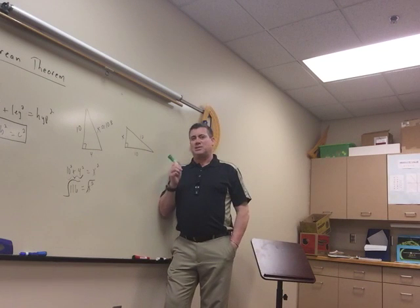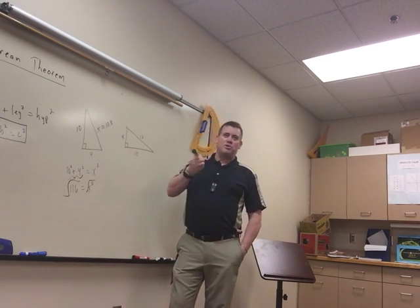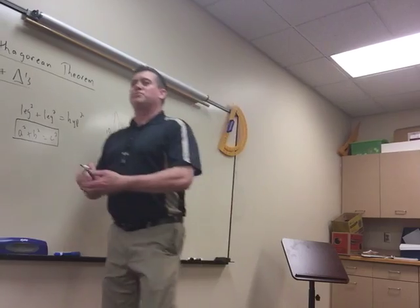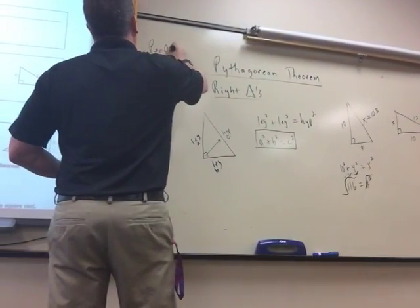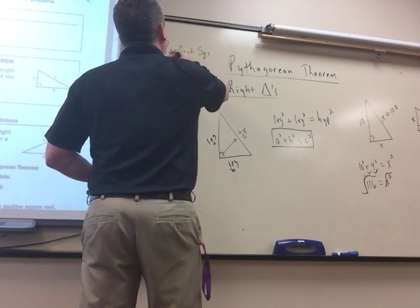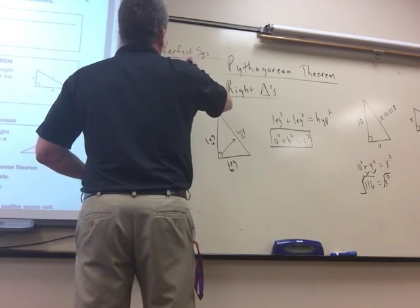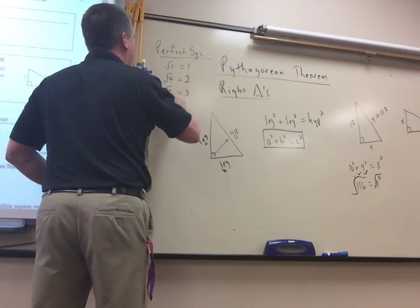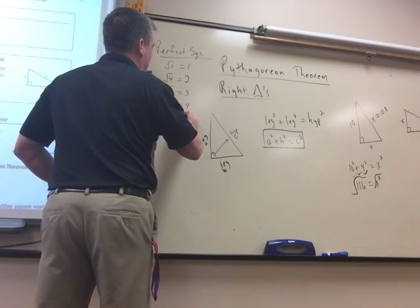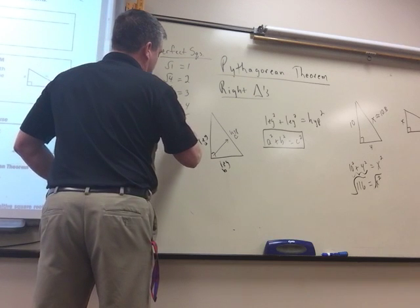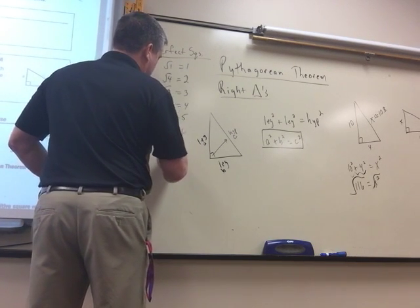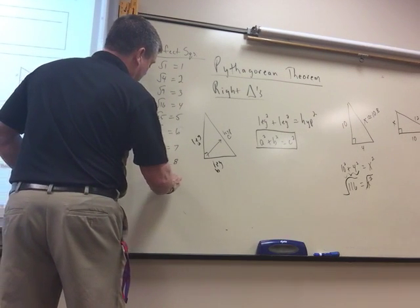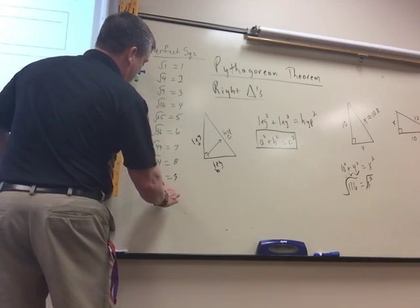For the next assignment, they tell you to leave it as a radical — like that worksheet we did at the beginning of this chapter — which means you can't write it as a decimal. Remember to simplify these: you have to find if any perfect squares go into it. Square root of 1 doesn't help, but 4, 9, 16, 25 are perfect squares. Here are the first ten perfect squares.